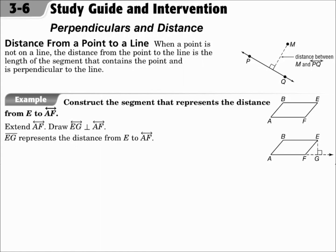This is lesson 3.6, Perpendiculars and Distance. Your objectives are to find the distance between a point and a line, and to find the distance between two parallel lines. When a point is not on a line, the distance from the point to the line is the length of the segment that contains the point and is perpendicular to the line. It always has to be perpendicular to the line, so when you draw from the point to the line, make sure you hit it at a right angle.